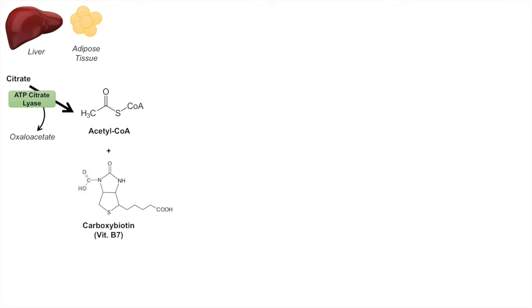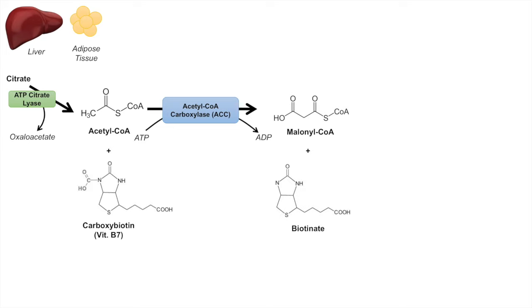Along with acetyl-CoA, we require a vitamin B7 derivative called carboxybiotin. These two undergo an enzymatic reaction with the enzyme acetyl-CoA carboxylase. The purpose of the carboxybiotin is to donate a carboxyl group to the acetyl-CoA. This reaction requires one ATP and forms malonyl-CoA. In the process, carboxybiotin is recycled into biotin, which can be recycled back into carboxybiotin for later reactions. The acetyl-CoA carboxylase step to form malonyl-CoA is the committed step and the rate-limiting step of fatty acid synthesis, so it is a very important step.